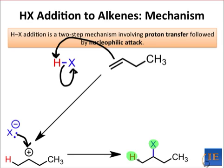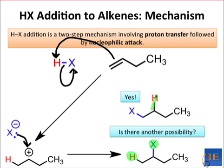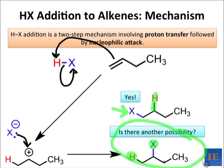However, this mechanism doesn't tell us the whole story. Is there another possible product that could form through a very similar mechanism? Yes. What if proton transfer placed the hydrogen atom at the internal position instead of the terminal position? The X-group would then end up on the terminal position. As it turns out, the bottom product — the one we drew originally — is strongly favored. Let's take a minute to see why.